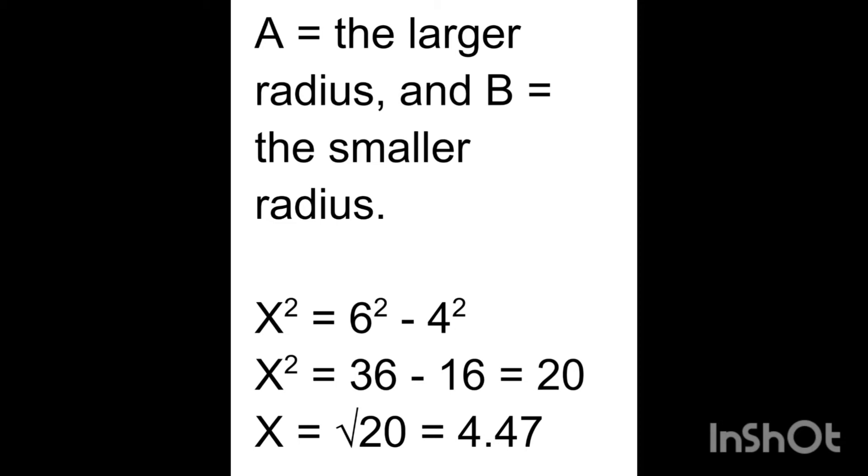All right, so we have some math here. Let's say for example A was 6 and B was 4. It would be 36 - 16 which would equal 20. So X would be the square root of 20 which is 4.47. Now 4.47 would be the distance from the center.